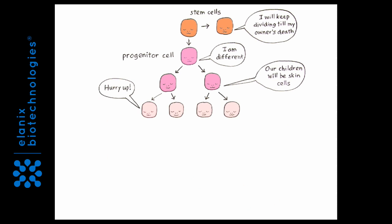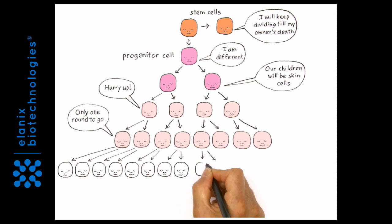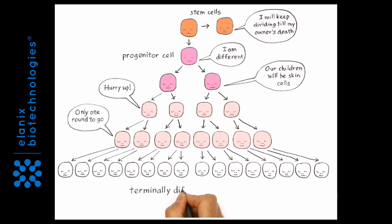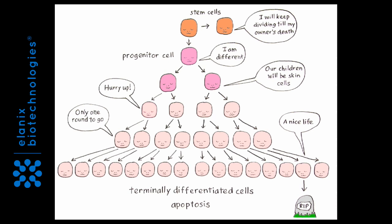It divides rapidly and in a limited fashion, generating just the right number of terminally differentiated cells needed to replace the cells that are undergoing apoptosis.